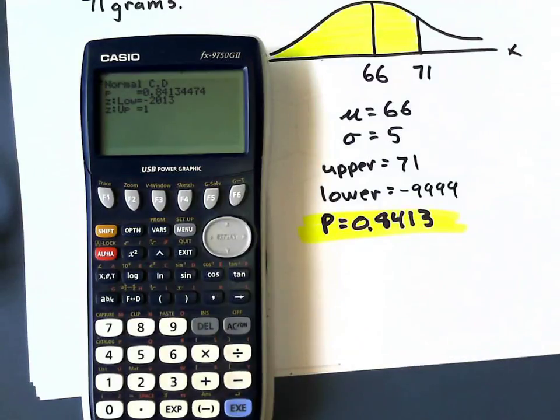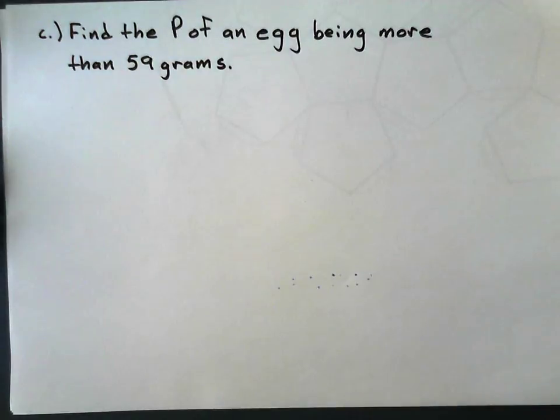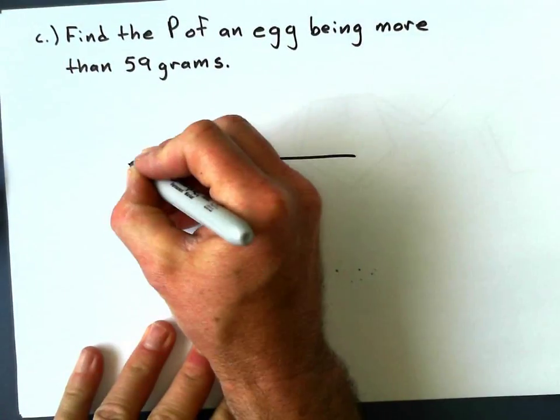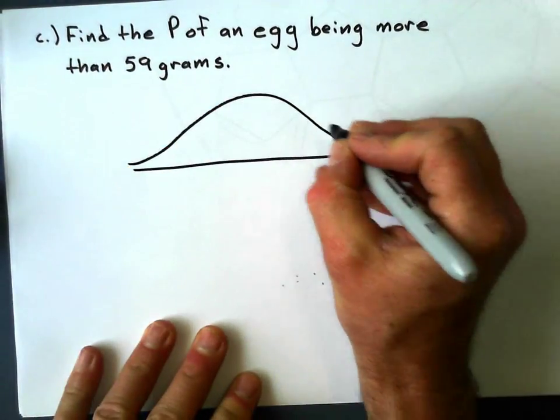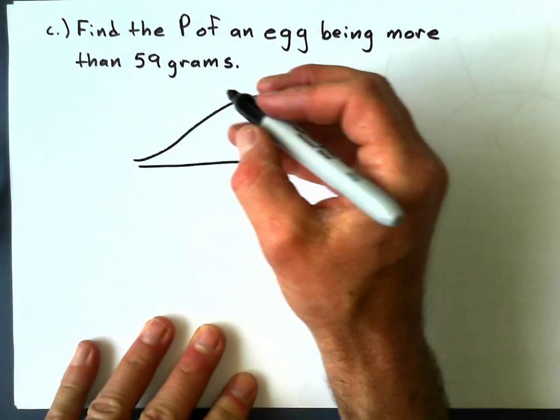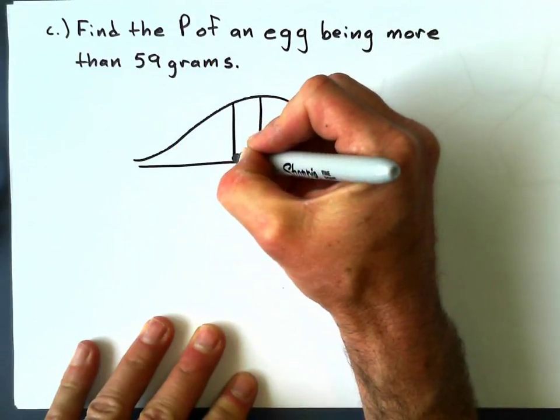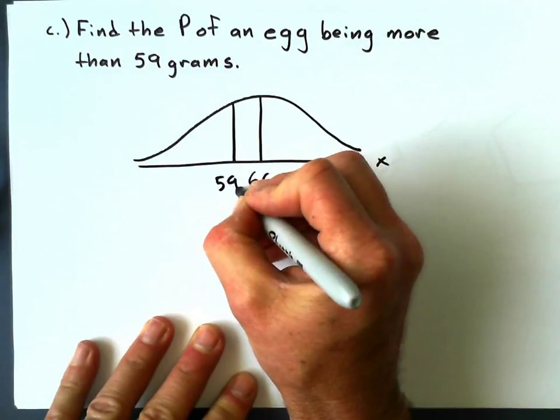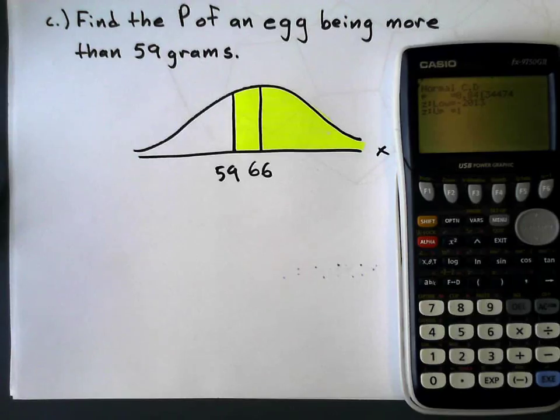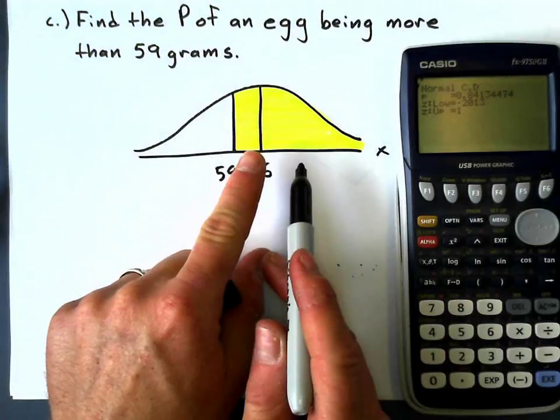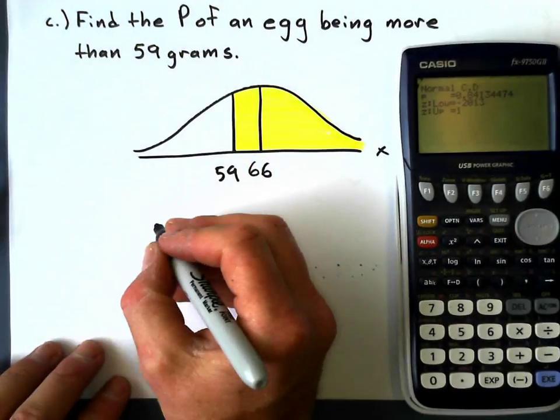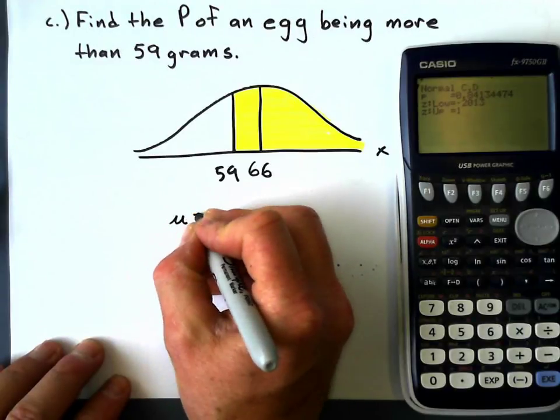Let's keep on trucking. Last one here: find the probability of an egg being more than 59 grams. Let's draw a normal curve. Mean is still 66, of course. 59 is going to be to the left of the mean there. More than 59 grams is going to be shaded to the right. The shading is just to help you out. My probability is going to be over 50% because more than 59 grams means more than 50% of the curve is shaded.